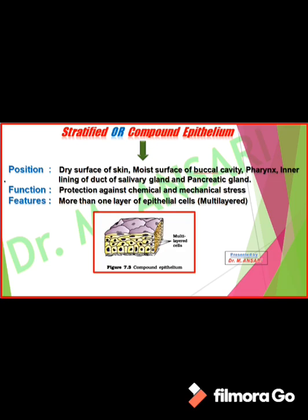As we go from the bottom to the free surface, cells become older and more flattened. The layer of cells facing the free surface contains the most flattened and oldest cells. Stratified or compound epithelium is present on the dry surface of the skin, the moist surface of the buccal cavity, pharynx, and the inner lining of the ducts of salivary glands.